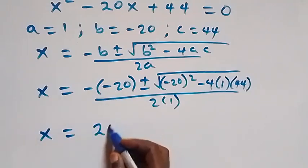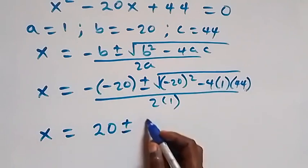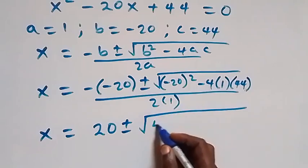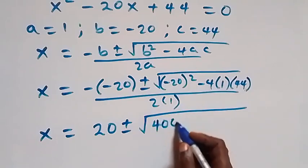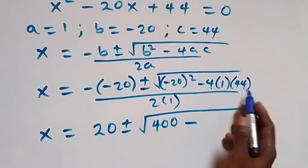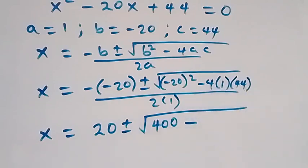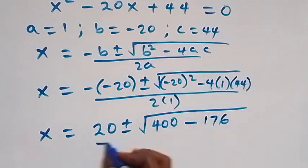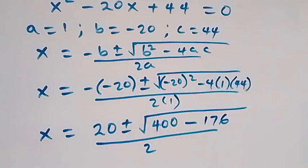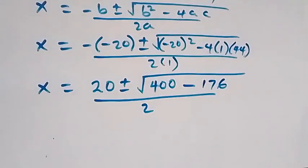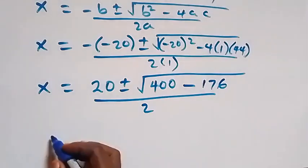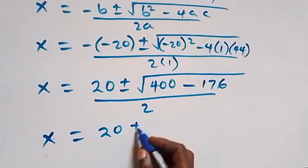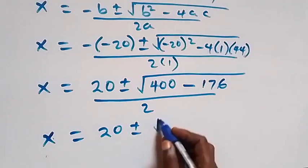We have 20 plus or minus square root of: minus 20 squared gives us 400, then minus 4 times 1 times 44 which is 176, all over 2.